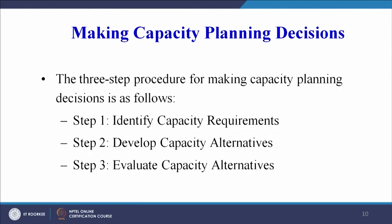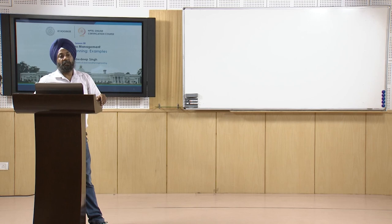We have to see what capacity we need to deliver to meet demand and how we can augment our capacity internally as well as with the help of outsourcing agents. Making capacity planning decisions involves a three-step procedure: identify capacity requirements, develop capacity alternatives, and evaluate the capacity alternatives.